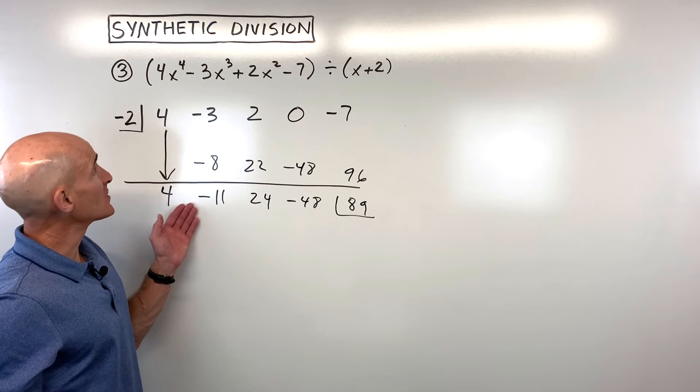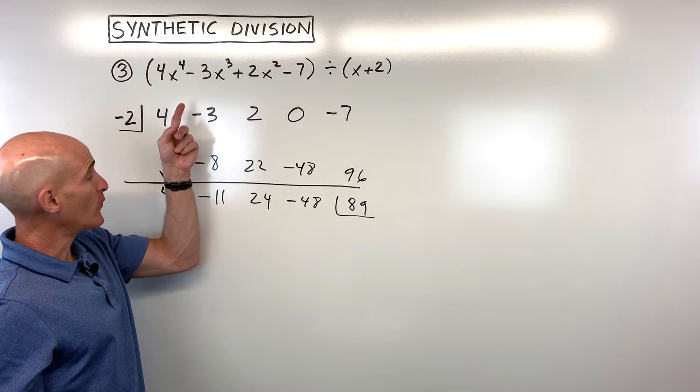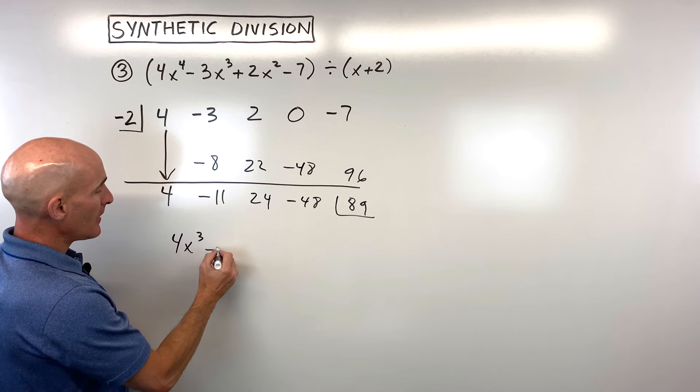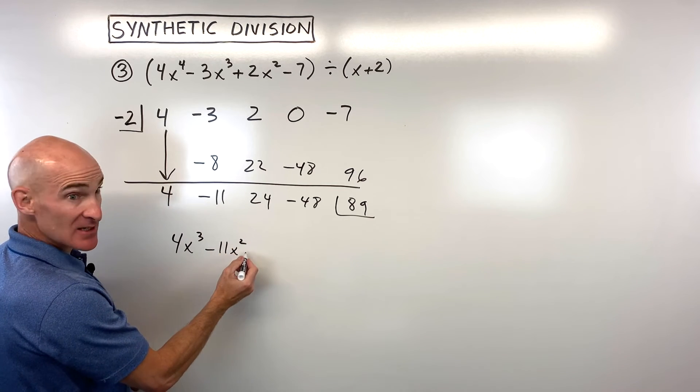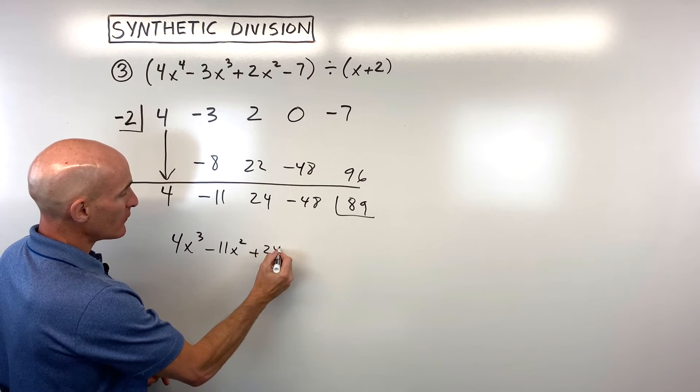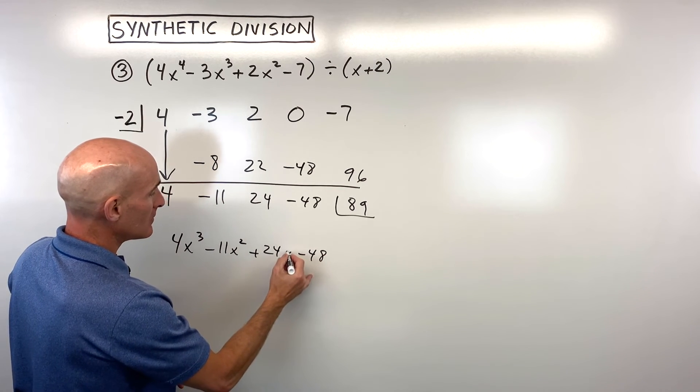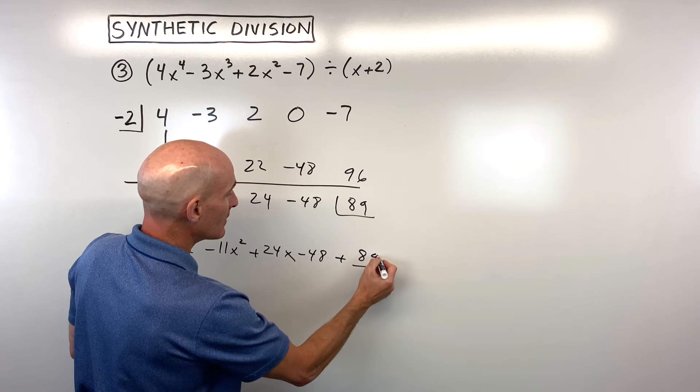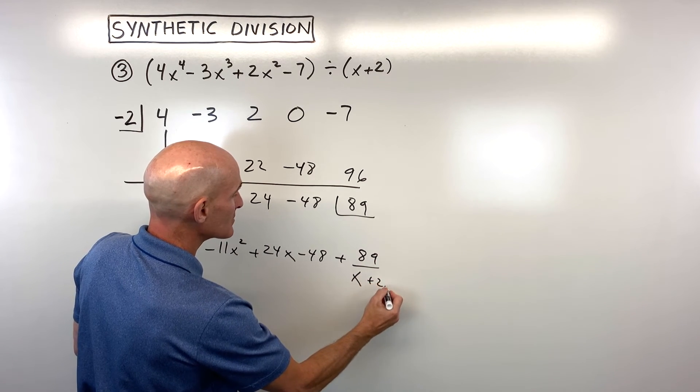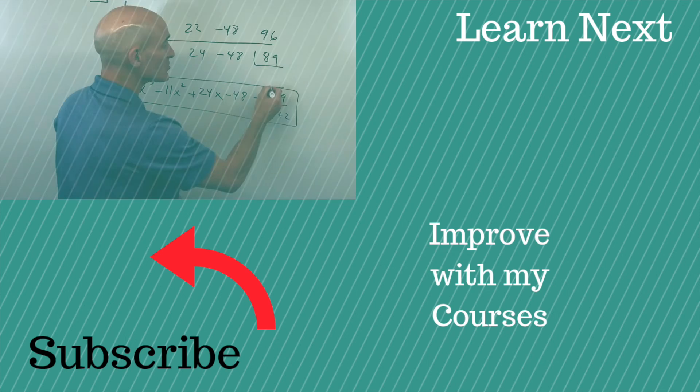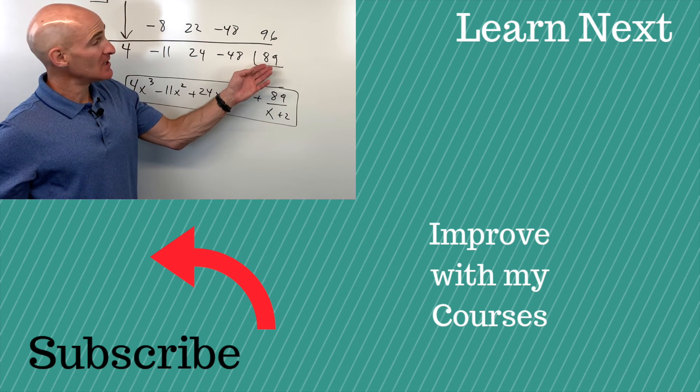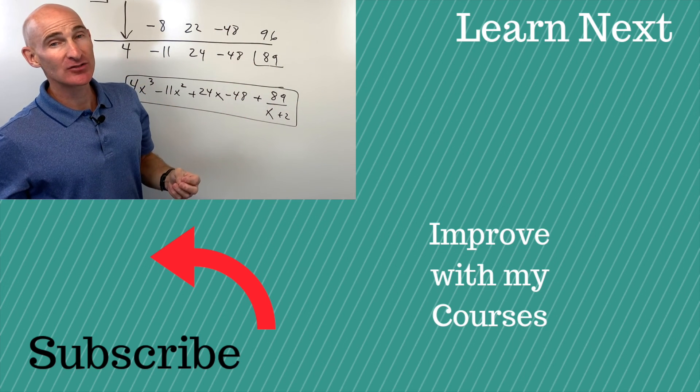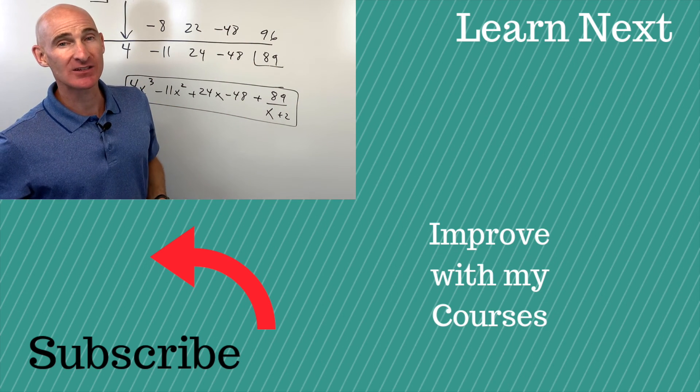So now what we can do is we can say, all right, we started off with x to the 4th. This is going to go down by 1 degree, so it's going to be 4x cubed minus 11x squared, going in descending order, plus 24x minus 48, plus our remainder, 89, over our divisor, x plus 2. And that's going to be your final result. Now remember, if this came out to 0, what that tells you is that x plus 2 is a factor, and negative 2 would be a 0, meaning like an x-intercept.